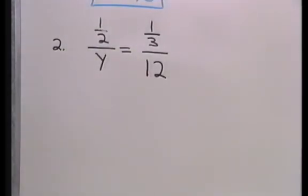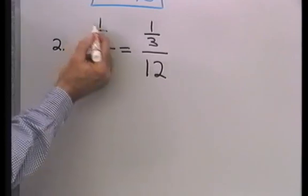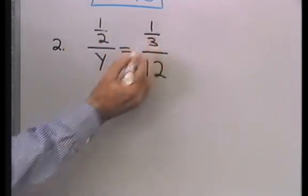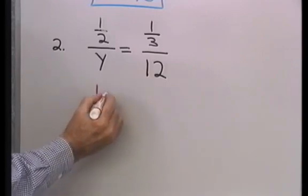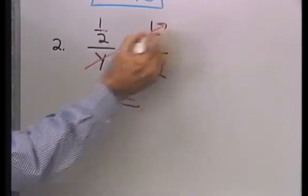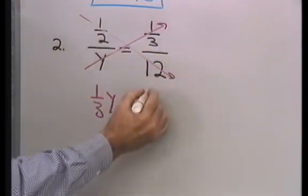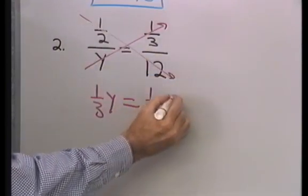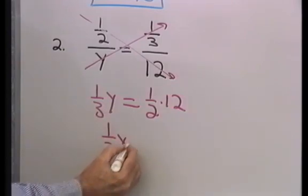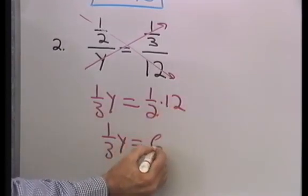(1/2) over y is equal to (1/3) over 12. Again, the product of the extremes is equal to the product of the means. So, y times 1/3, which is (1/3)y, must be equal to 1/2 times 12. So, that product is equal to that product. So, 1/2 times 12, I end up with (1/3)y is equal to 1/2 times 12 is 6.